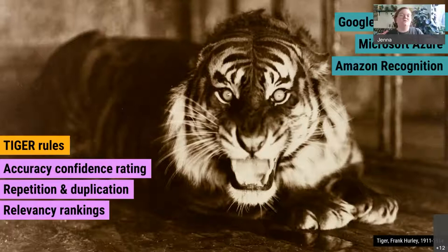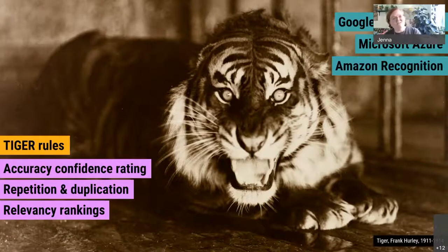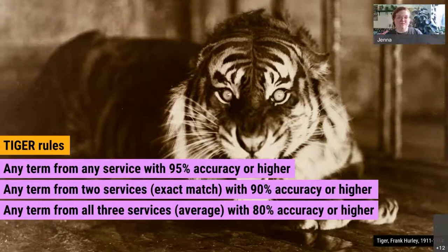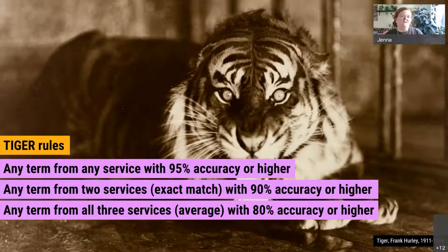We also take into consideration things like repetition and duplication of terms across the services. Because we're using three different services, we can compare and contrast them. The rules-based system is essentially a series of mathematical equations that looks at all the raw data. We look at confidence level ratings — the higher the confidence level, the more likely we will accept that term, because higher confidence generally equates to higher accuracy. We also look at whether two of the three services returned the same tag; if so, we weight that higher than a term delivered by only one service.